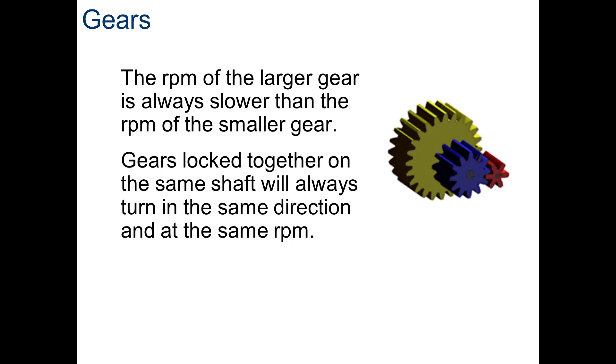On the contrary, if gears share a shaft like they do in a compound gear train, the two gears on the shaft, on the same shaft, sharing shaft, rotate at the same rpms or revolutions per minute.